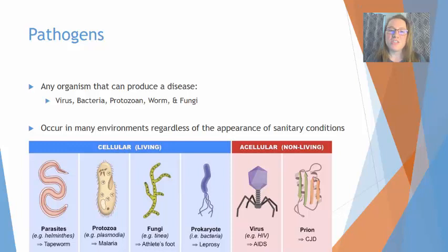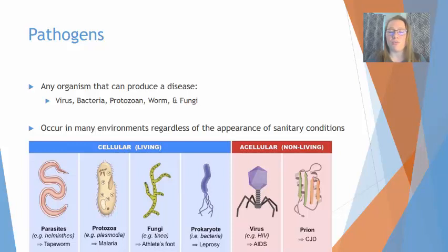Pathogens are any organism that can cause some type of disease. These can come in the form of viruses, bacteria, protozoan or protists, worms, and fungi. These pathogens can occur in a variety of environments regardless of whether or not that environment appears sanitary.